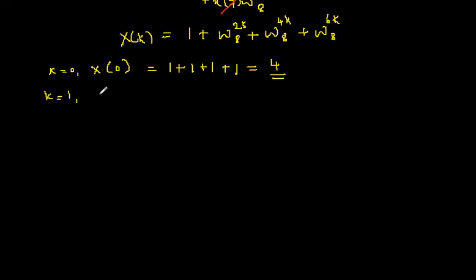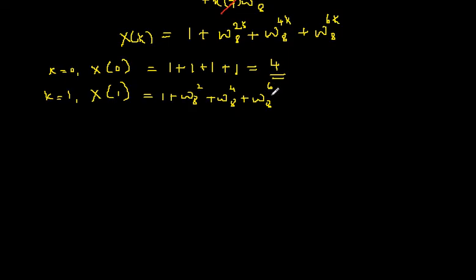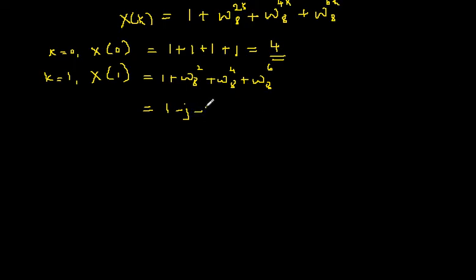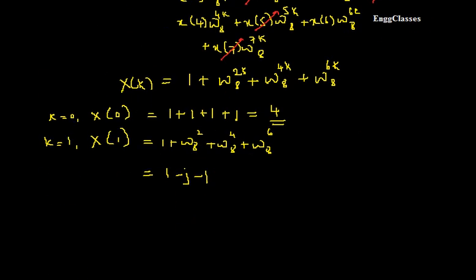Similarly, proceeding in the same way, put k=1 to get X(1). The expression becomes 1 + W8^2 + W8^4 + W8^6. Substituting values: W8^2 = -j, W8^4 = -1, W8^6 = +j. So 1 + (-j) + (-1) + j: the 1 and -1 cancel, and -j and +j cancel, giving 0. So X(1) = 0.